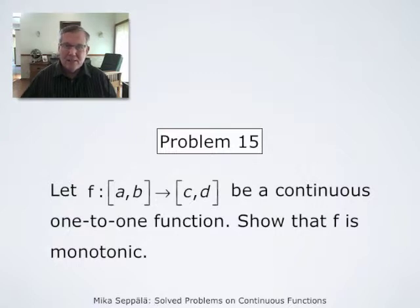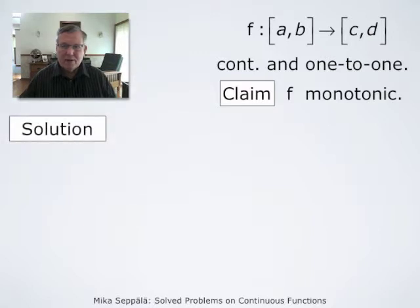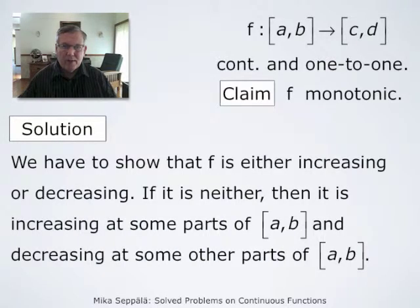One-to-one means injective — it means that f takes a given point in the interval from c to d at most at one point in the interval from a to b. We prove this by contradiction: we assume that if f is not monotonic, then we get a contradiction. So we have to show that f is either increasing or decreasing.